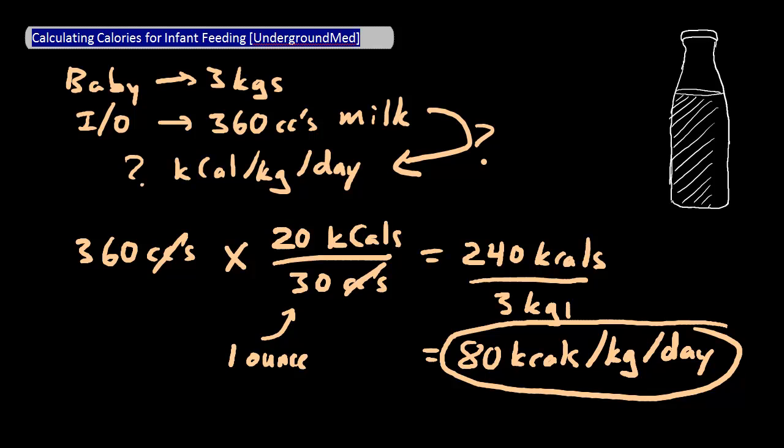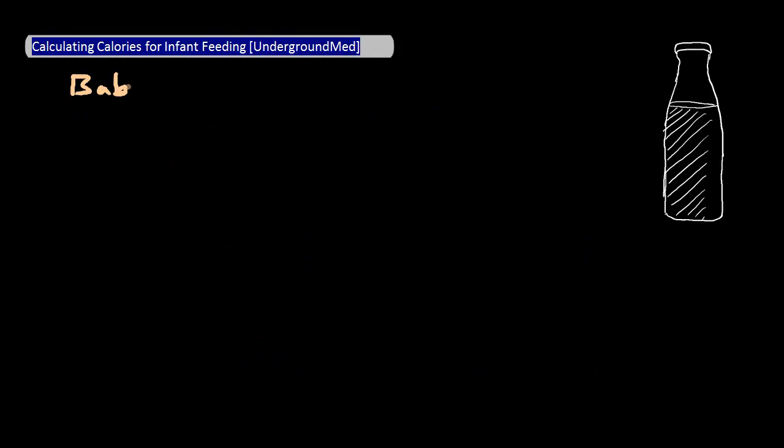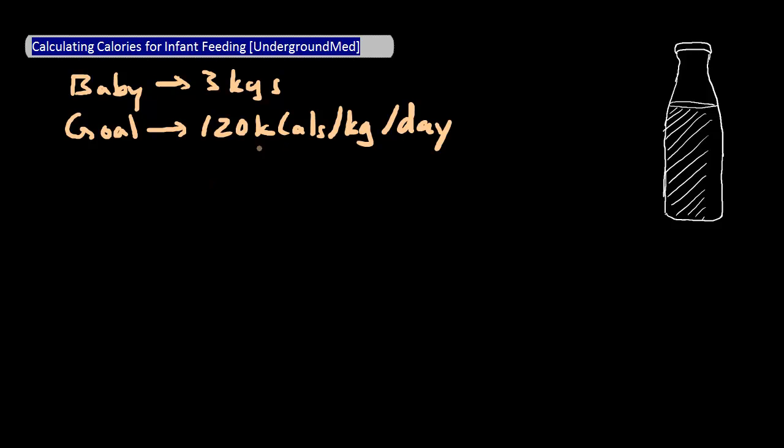The next step is to flip the math. The nutritionist has recommended that we increase the caloric intake. So the caloric goals for the next couple days to make up will be 120 kilocalories per kg per day. And with the help of nutrition, we're going to use a 26 kilocalorie per ounce formula. So what we need to know is, as we're monitoring the I's and O's, how many cc's per day should the patient be taking in?